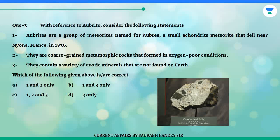Question 3. With reference to aubrites, consider the following statements. 1. Aubrites are a group of meteorites named for Aubres, a small achondrite meteorite that fell near Nyons, France, in 1836. 2. They are coarse-grained metamorphic rocks that formed in oxygen-poor conditions. 3. They contain a variety of exotic minerals that are not found on earth. Which of the following given above is correct?